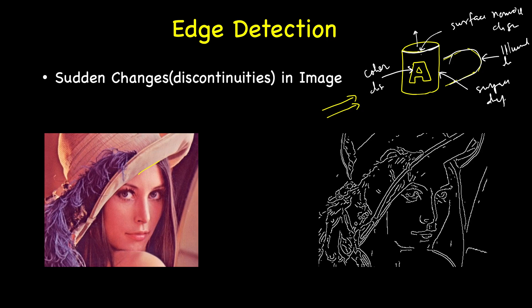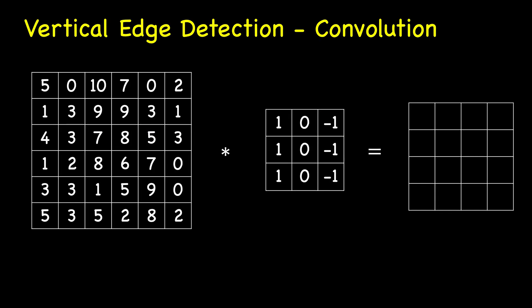There can be multiple regions of edges, but we are not going into those details. We will start with simpler examples. First, let's understand what convolution is, then develop our own vertical and horizontal edge detectors, and then see how these parameters can be learned using convolutional neural networks to create a very robust edge detector.